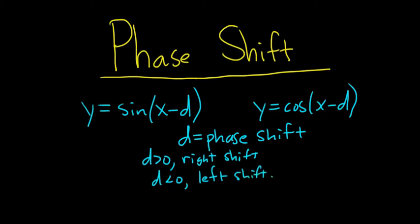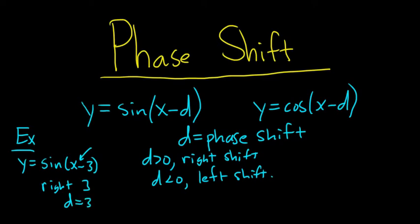Let's look at some examples. It's pretty easy. Say we had y equals sine of x minus 3. This is a right shift. If you remember from other math classes, whenever you subtract the number from the x, you think it's left, but no, it's right. So we're going right 3 in this case. The phase shift here is d equals 3, because it's x minus d, so your d is 3.